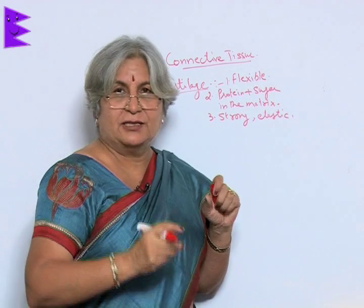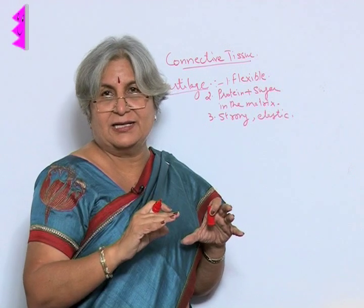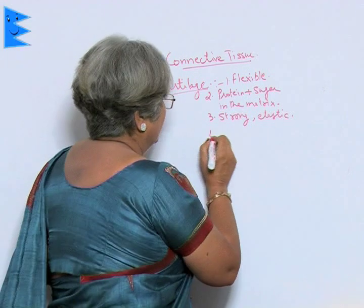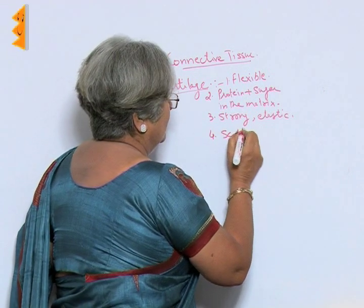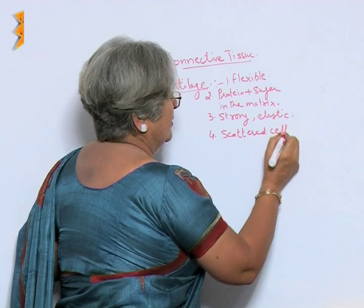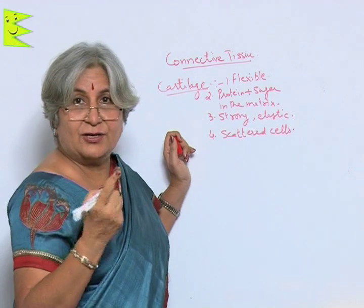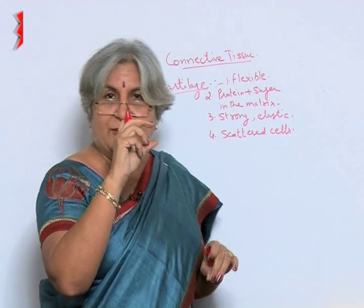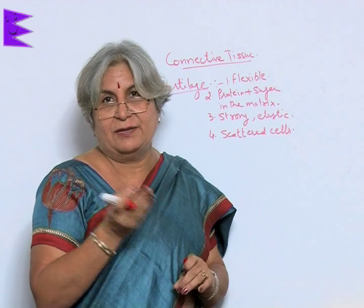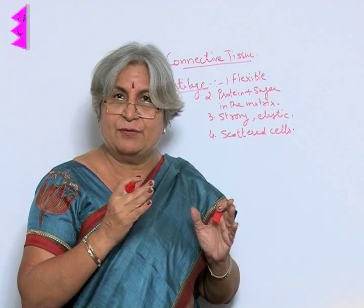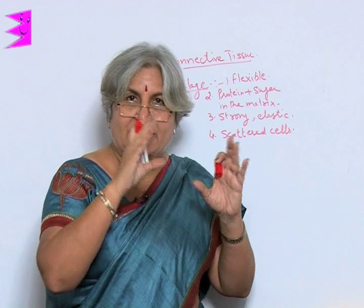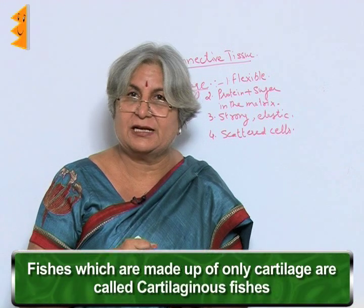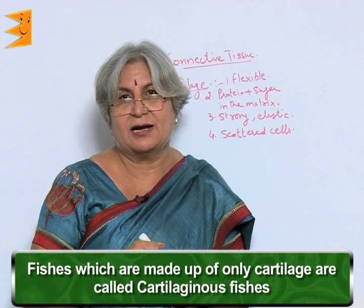In cartilage, the cells are scattered in the matrix and not arranged in any specific shape. Cartilage is present not only in the nose and ears, but also between the joints where it prevents friction. Together, bone and cartilage provide us with the framework. Some fishes are made up of only cartilage and are called cartilaginous fishes.